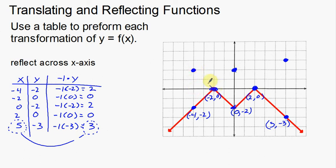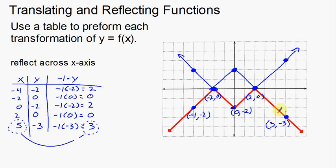Now I'm going to connect the dots. A little arm going out here, and an arm going out there. Peaks have now become valleys, and valleys have now become peaks. This is my function reflected across the x-axis. Notice that points sitting on the x-axis stayed where they are, but other points got flipped — distance of 2 became distance of 2 on the other side, and this point got flipped, distance of 3 to distance of 3. That is an example of reflecting a function using a table. That was translating functions and reflecting functions.